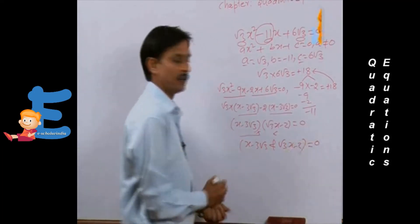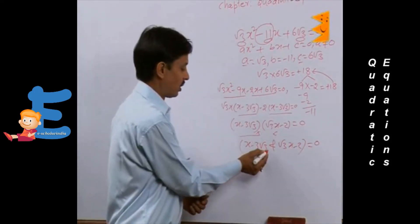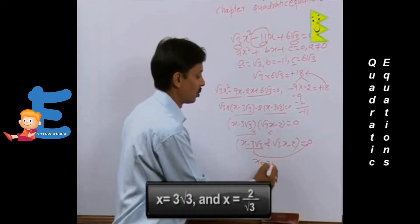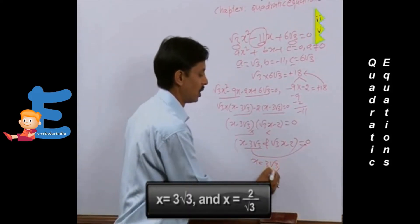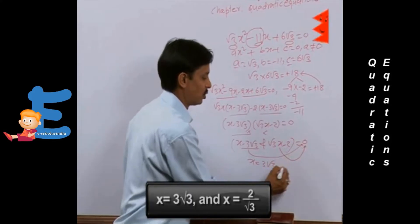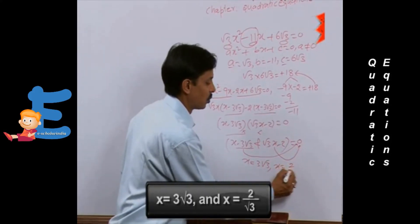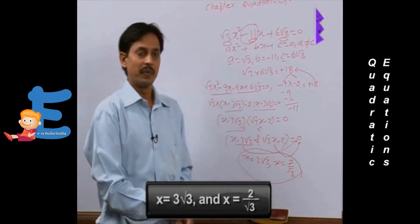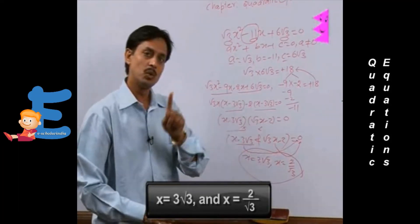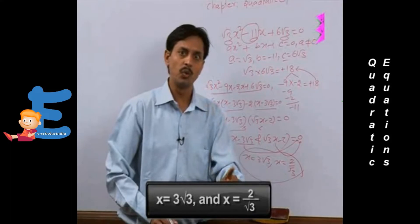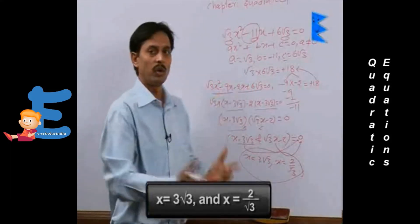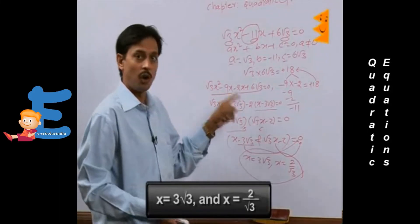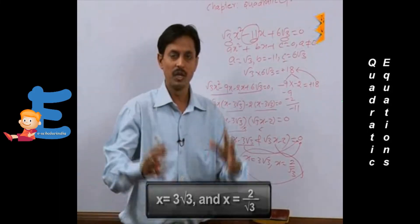Setting each factor to zero: when (x - 3√3) = 0, we get x = 3√3, and when (√3x - 2) = 0, we get x = 2/√3. So ultimately we are getting two solutions, two roots, two values. This is known as the method of splitting the middle term.